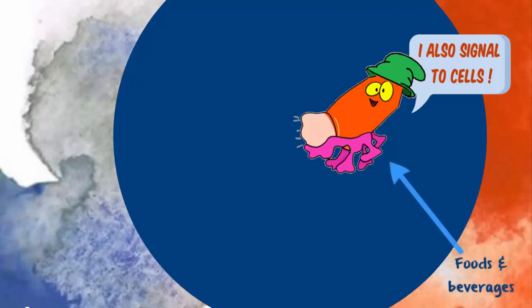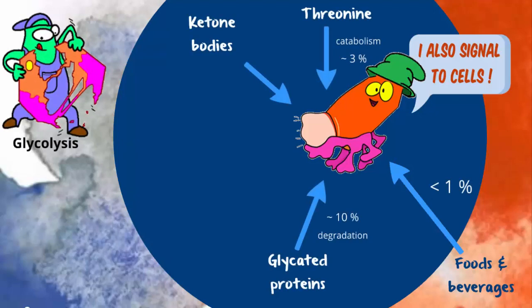It's one of the AGEs that we consume, but most of the methylglyoxal circulating is made endogenously. A couple of biochemical pathways make it.